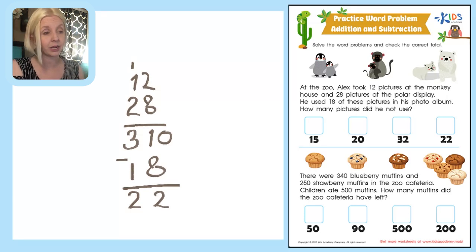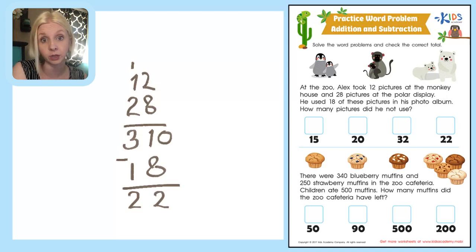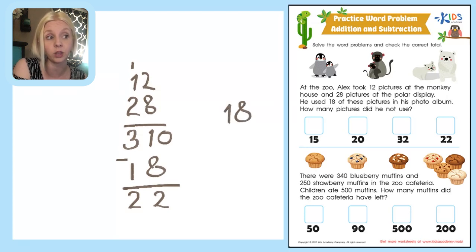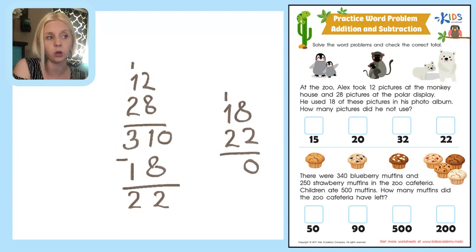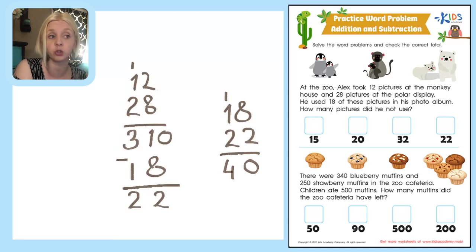That should be our answer. But I can make mistakes with carrying and borrowing, so I'm going to double-check that 40 minus 18 is 22 by adding 18 and 22 together. 8 plus 2 is 10 — carry the 1. 1 plus 2 is 3, plus 1 is 4, which is 40. So I did that correctly. How many pictures did he not use? 22. And it says to check the correct total, so I'll put a check mark right there.